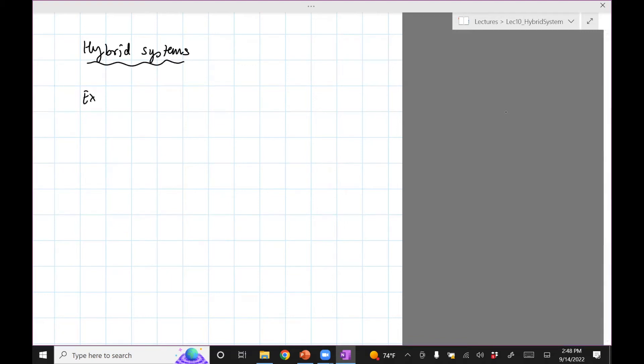So we'll do a simple example: bouncing ball. The reason I want to have a simple example is because there is some terminology, some things about how to simulate a system like this which is kind of important. Unless you have the intuition, it's difficult to do a more complicated system.